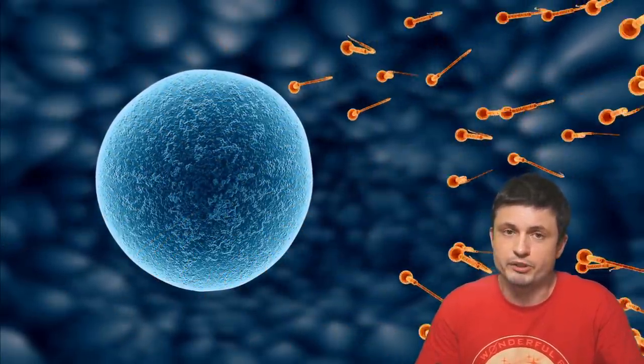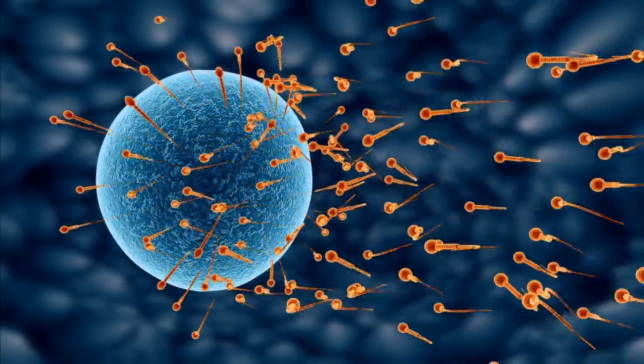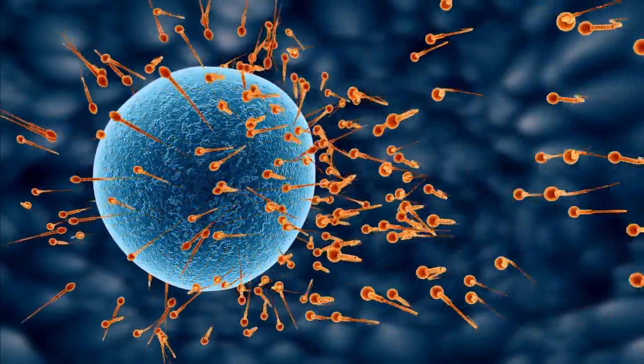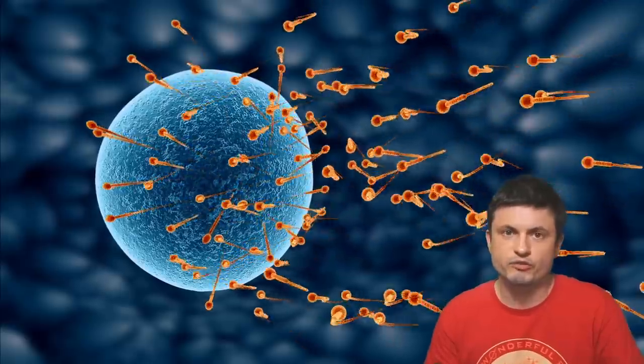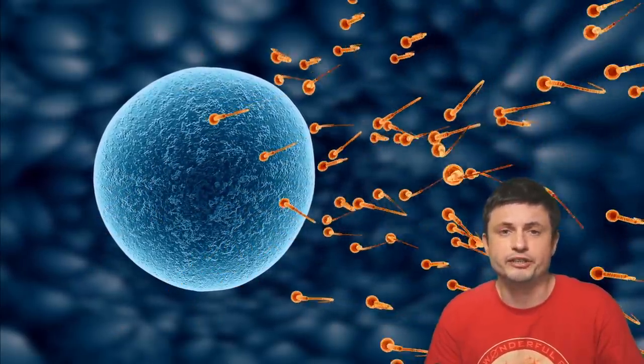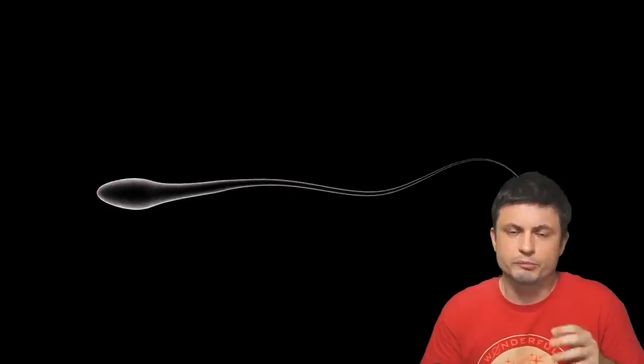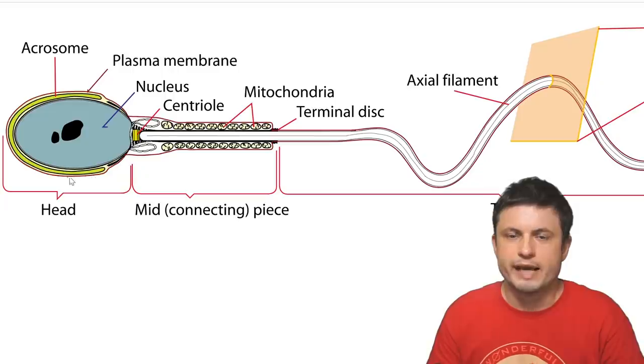The first step is for the egg to actually announce their presence to sperm and to somehow attract them. This is usually done through the method known as chemotaxis. A certain type of protein released by the egg attracts the sperm and kind of guides it to the location of the egg.